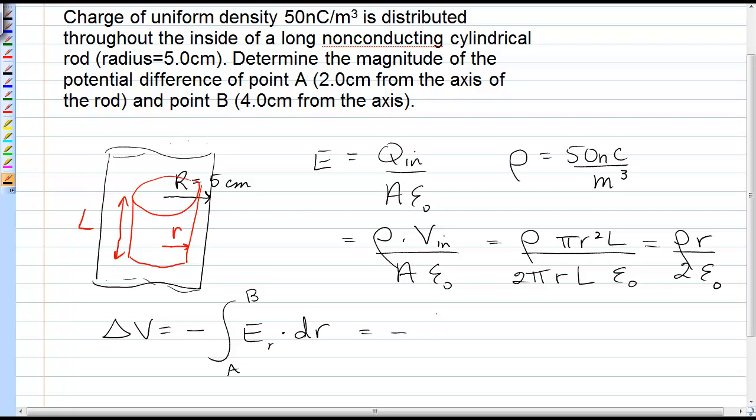Substituting in for this electric field, which is a function of r, we'd have rho r over 2 epsilon naught dr. Rho is uniform, so that can come out of the integral. And we have negative rho over 2 epsilon naught, the integral of r dr.